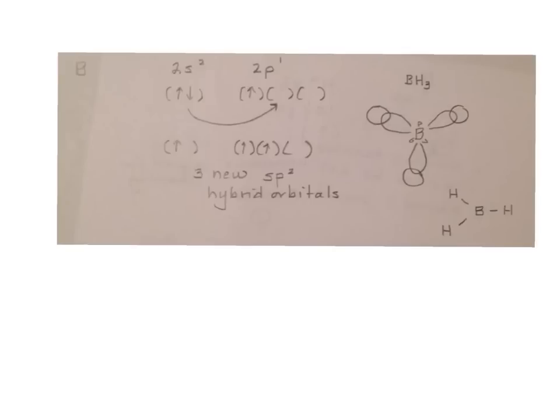If we look at boron, its electron configuration is 2s2, 2p1. We draw the orbital diagram, and since it only has one unpaired electron, it looks like it can only form one bond. But instead, it promotes an electron, so now it has three unpaired electrons. So it's going to form three bonds.